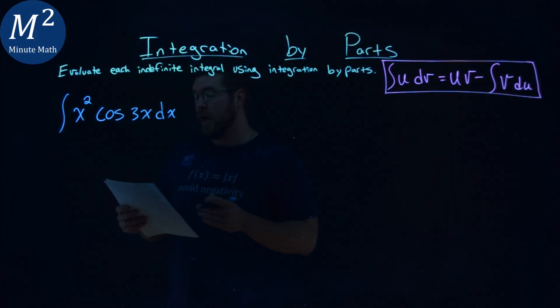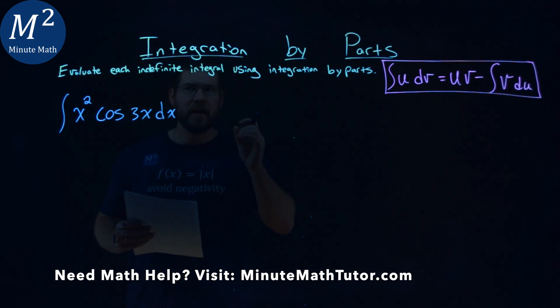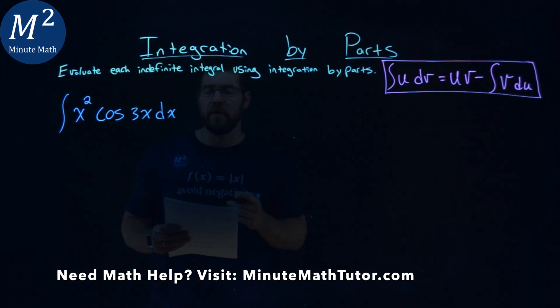We're given this problem right here: the integral of x squared cosine of 3x dx. We have to evaluate this indefinite integral using integration by parts.